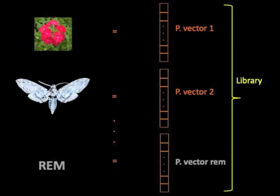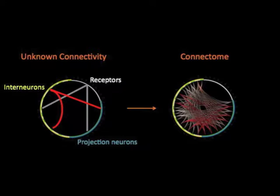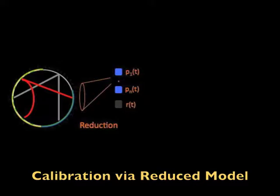We then use the library of the population vectors to construct the connectivity of the network. At the first step, we project the implicit network onto the population vectors and obtain a reduced model.